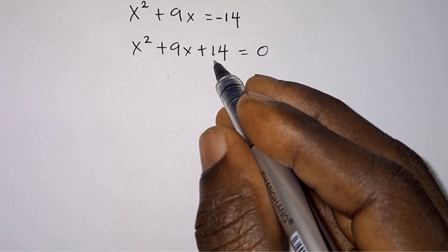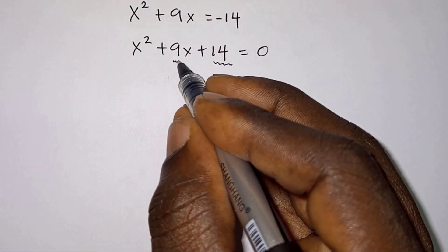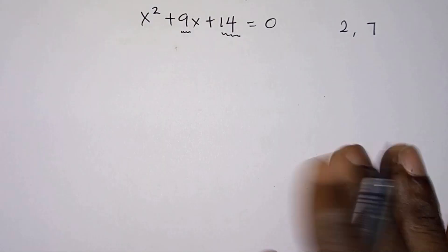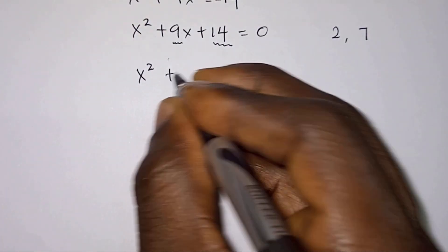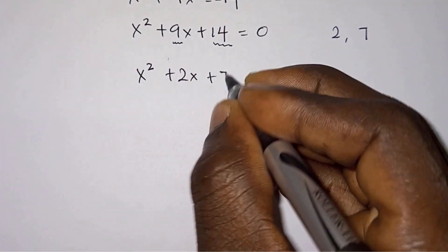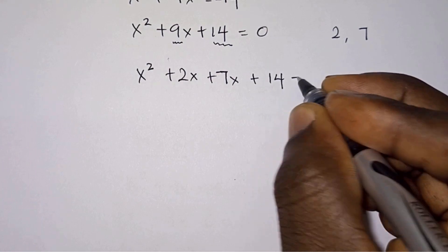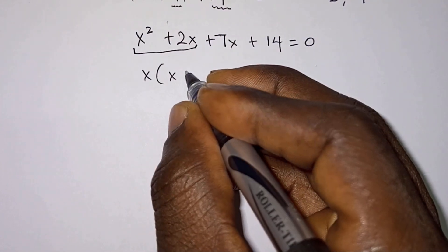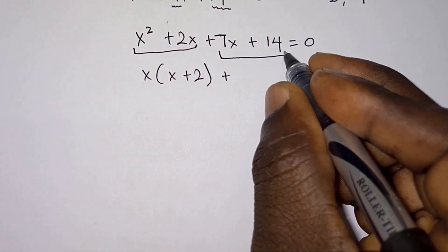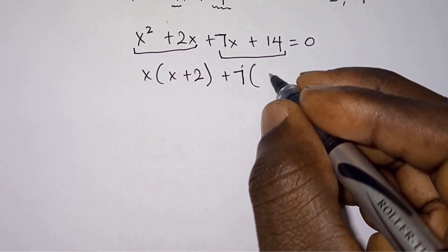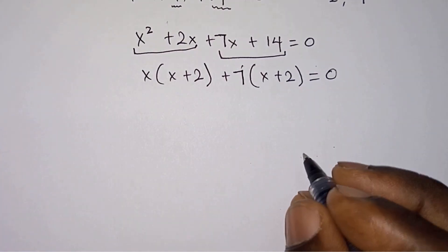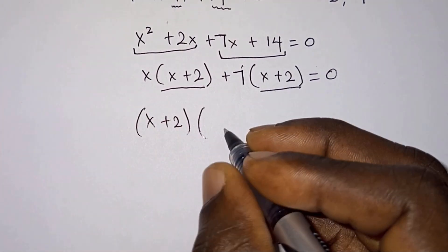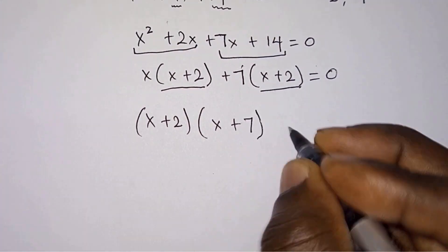We look for two values that multiply to positive 14 and sum to positive 9, and the factors are 2 and 7. So the equation becomes x squared plus 2x plus 7x plus 14 equals zero. Taking x out from the first two terms gives x times x plus 2, then taking 7 out from the last two terms gives 7 times x plus 2, and this equals zero.